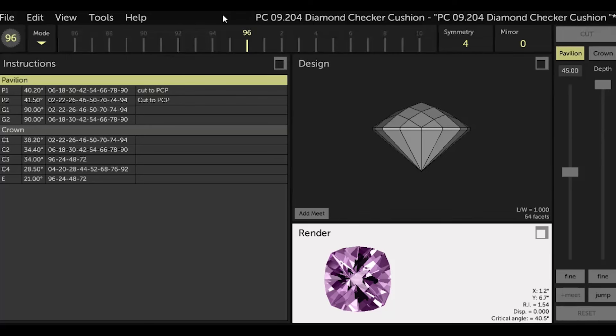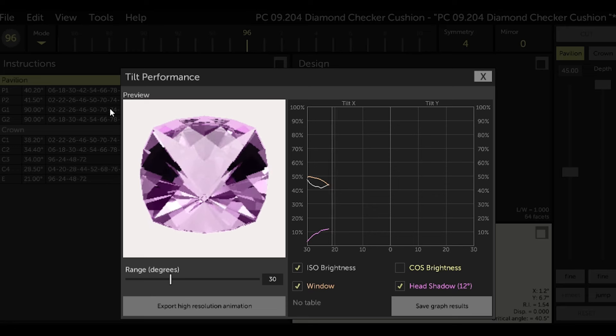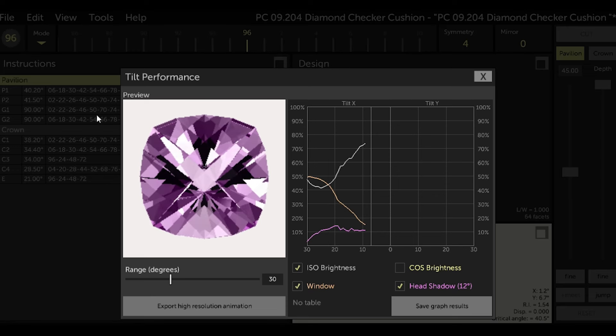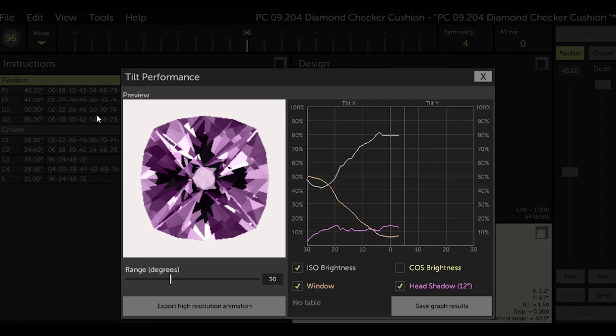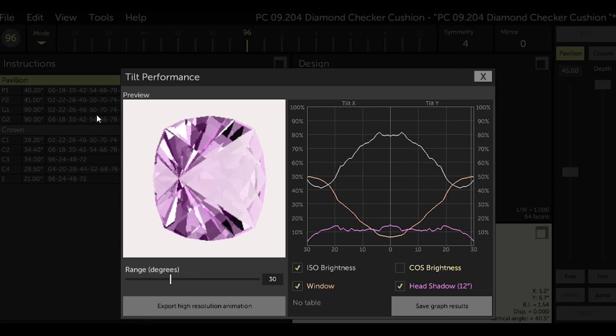Another feature of GCS which I routinely use to examine a design before I start cutting is called the tilt performance feature. Here, what I mainly look at is the brightness, which GCS is estimating for the finished stone, and the windowing, where light passes through the stone and is not reflected back.